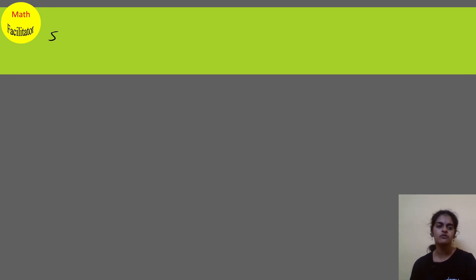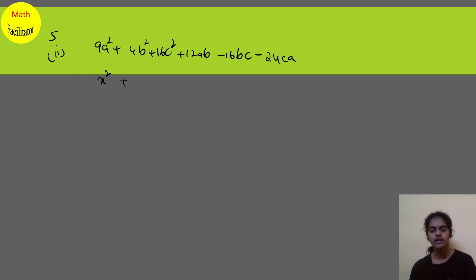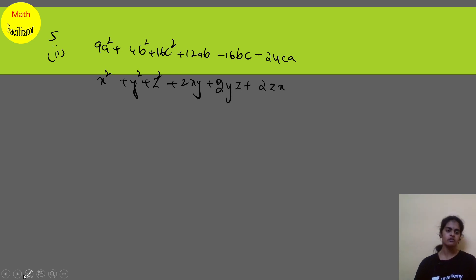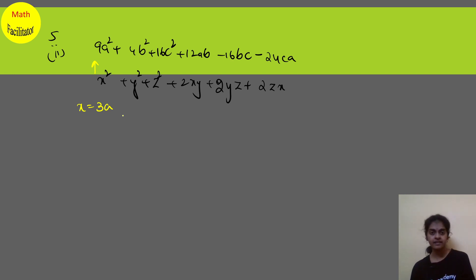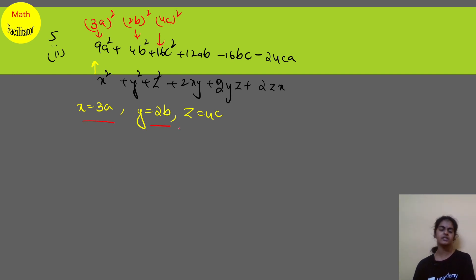Let's proceed to the next question — the second question of question 5. You have 9A squared plus 4B squared plus 16C squared plus 12AB minus 16BC minus 24CA. Comparing this to x squared plus y squared plus z squared plus 2xy plus 2yz plus 2zx: in the place of x I have 3A because 9 is 3 squared, so this is 3A whole square. In the place of y I have 2B, giving 2B whole square. In the place of z I have 4C, giving 4C whole square.